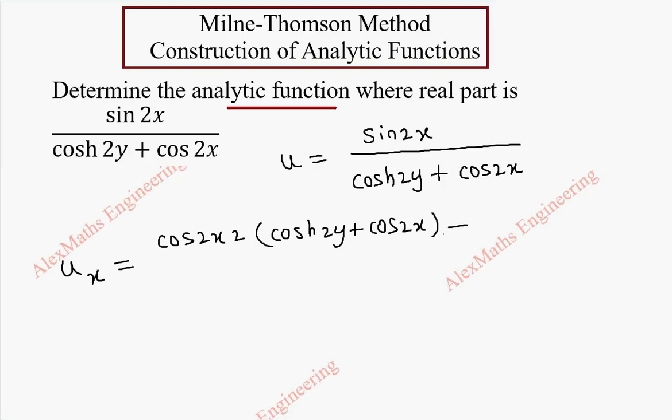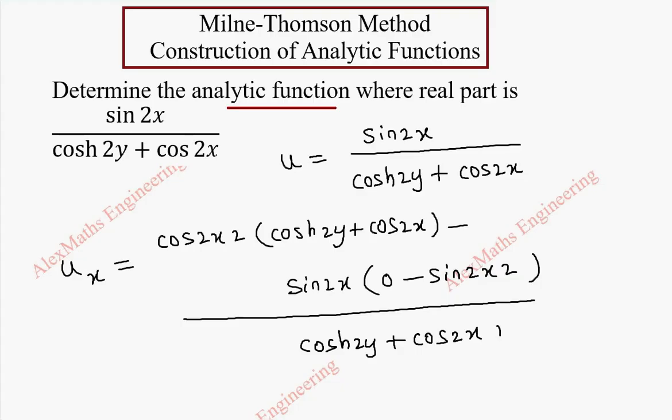Then minus numerator is written as it is and derivative of the denominator first term is 0 because y is treated as a constant so cosh 2y is constant. Then cos 2x is minus sin 2x into 2 whole division we have square of the denominator. Using the quotient rule, we have completed the u_x.